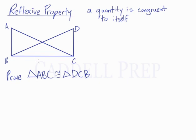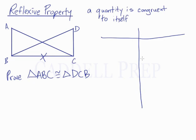A good way to mark up our diagram is to put an X here so we know that this side is congruent to itself. And when we have our statements and reasons, we'll have our given information here, maybe some other steps that we come across. What we'll write is that side BC is congruent to side CB — this might be step 4 — because of the reflexive property.